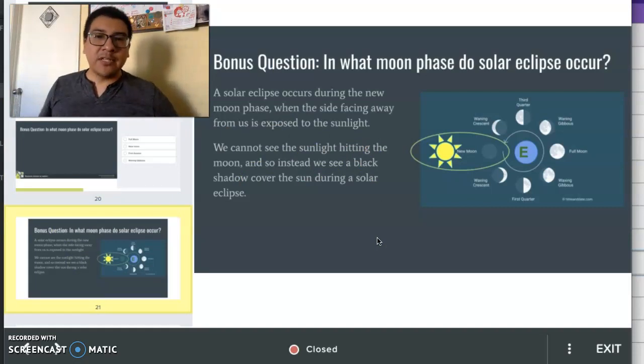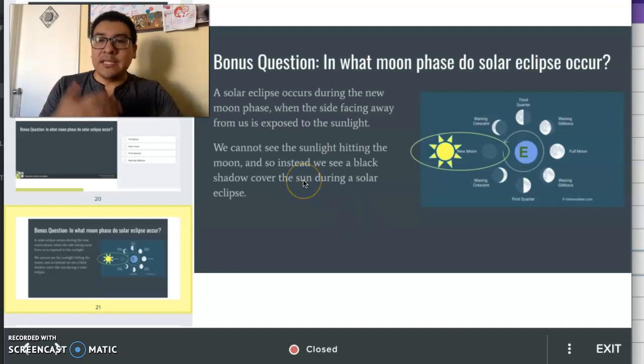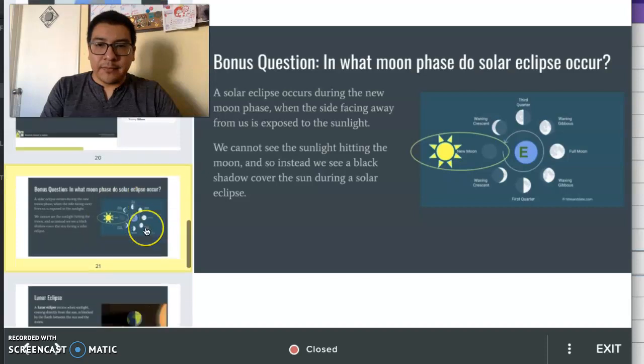So remember that a solar eclipse occurs during a new moon when the side facing away from us, away from Earth, is exposed to the sunlight. So because of that, we don't see any sunlight that's being exposed on our side that's facing the Earth. Instead we see a black shadow covering the sun.